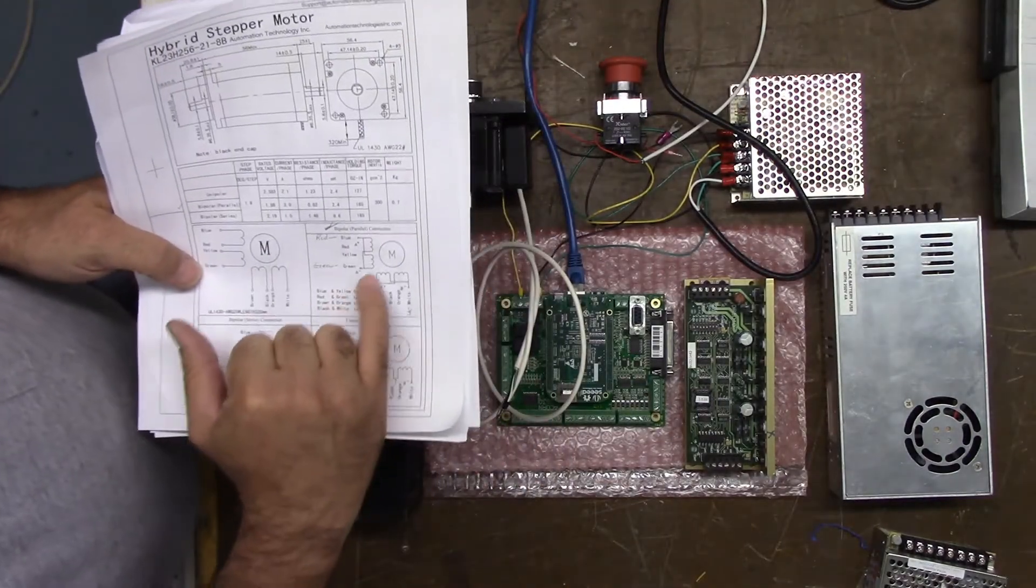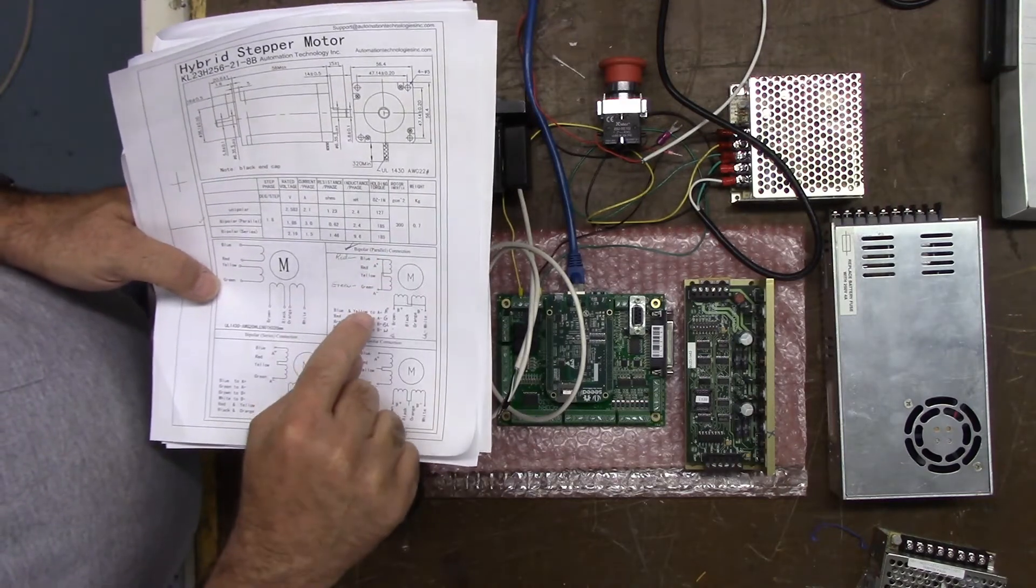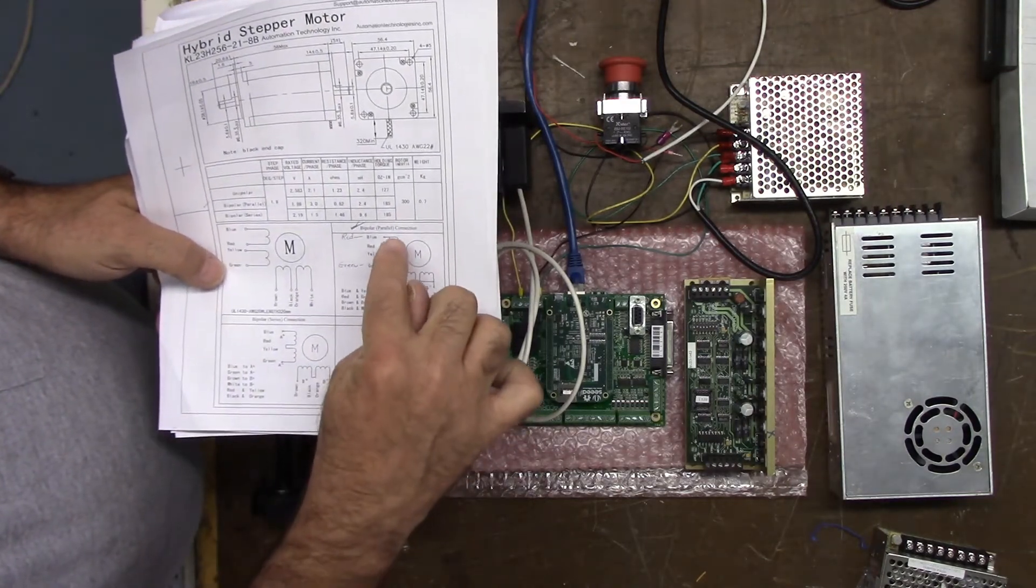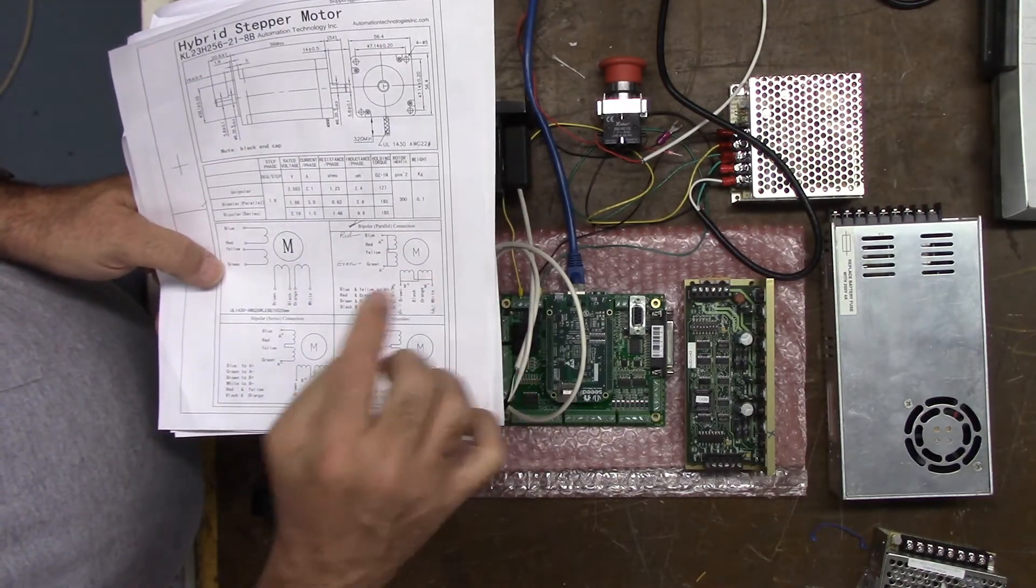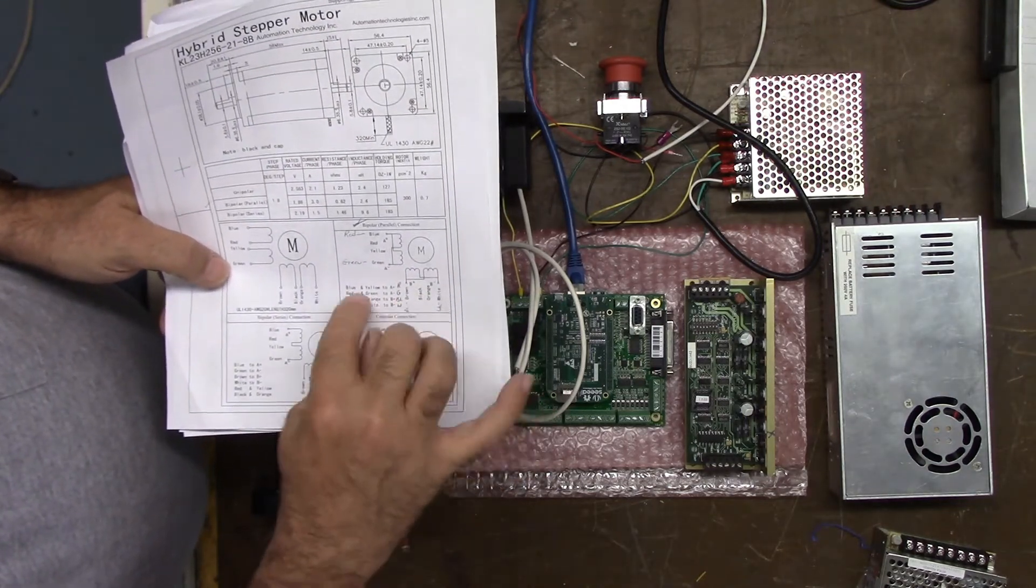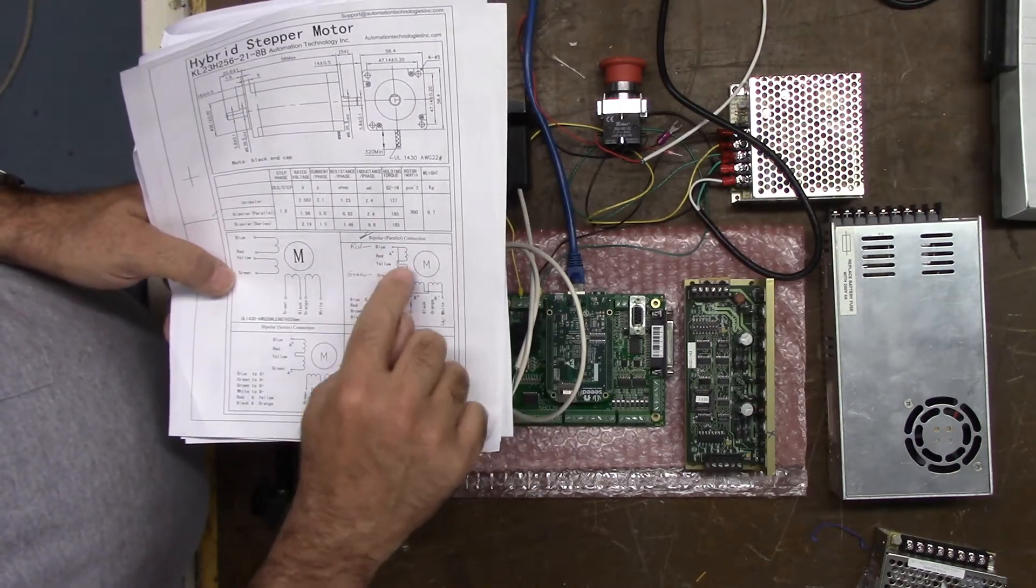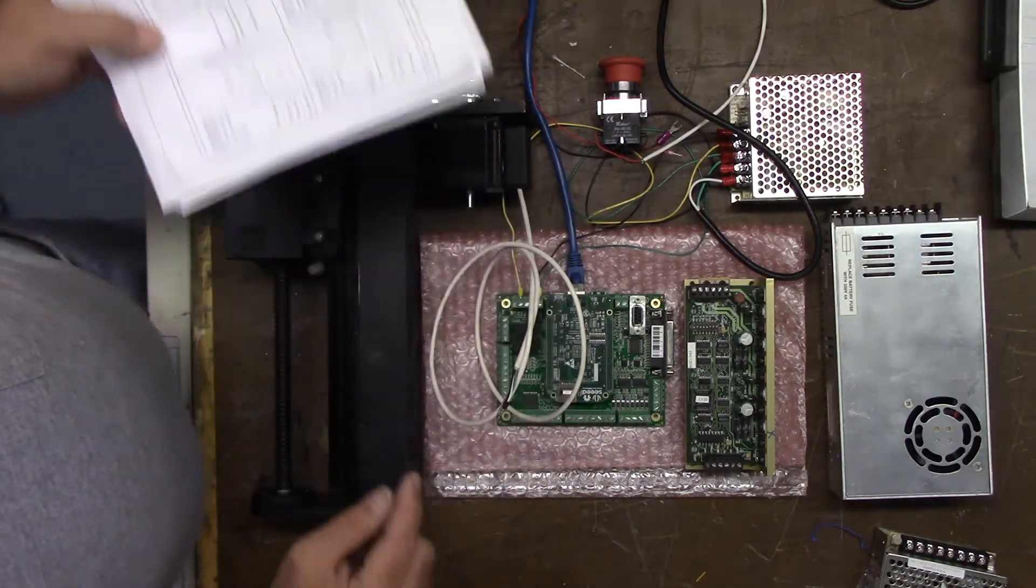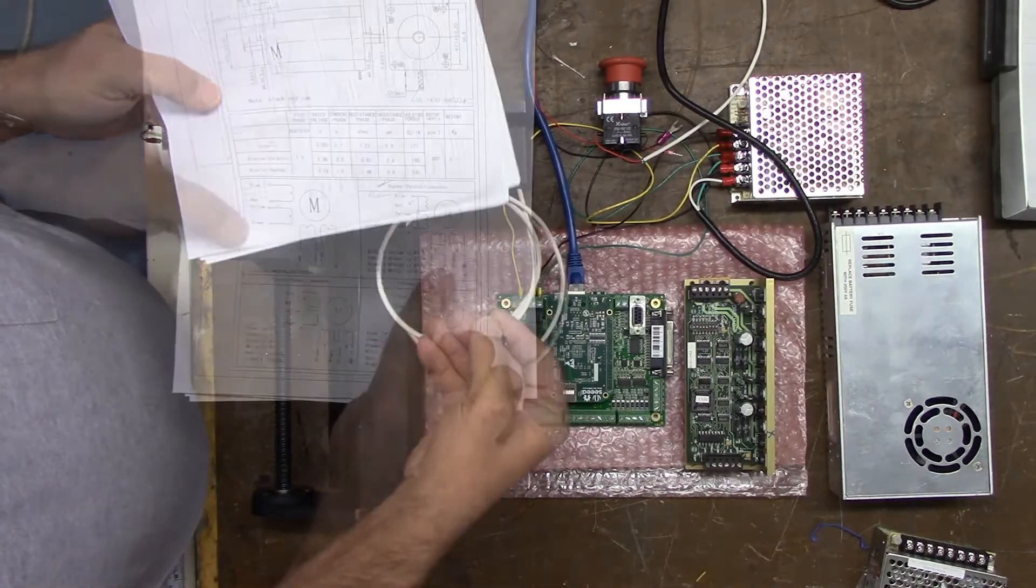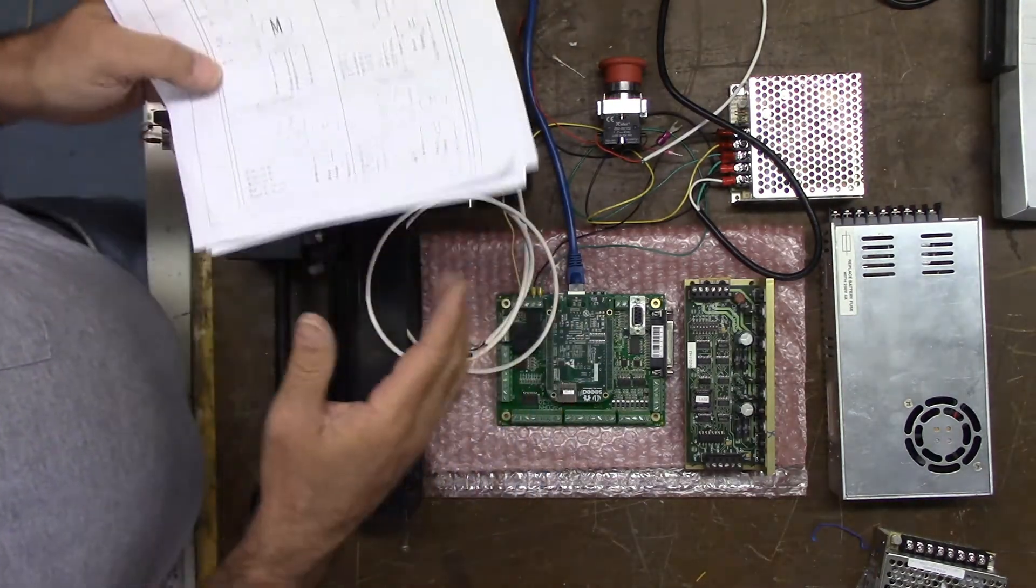This particular motor has eight wires on it. I've configured it as bipolar parallel. So what it is, you're paralleling the coils on top of each other and this gives a really good description on what you need to do. I've already done that and I have red and green on my A coil wired up. There's red and green. I have black and white on my B coil. So that's already set up. We won't be doing that.